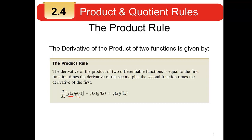The product rule says if you want to take the derivative of the product of two functions, f and g, you take f and multiply it by the derivative of g. Then you take the reverse: you take g and multiply it by the derivative of f. And then you add those two products. A little more complex than you might have thought, but not overly so.